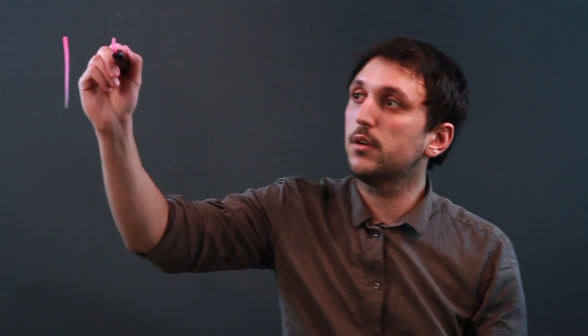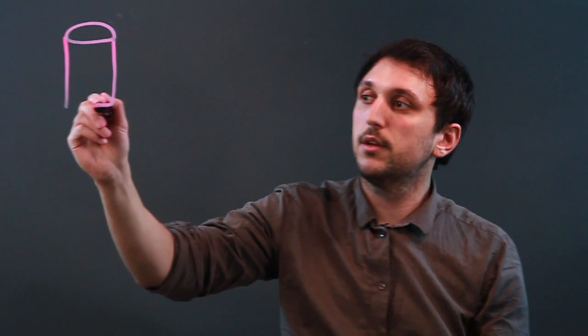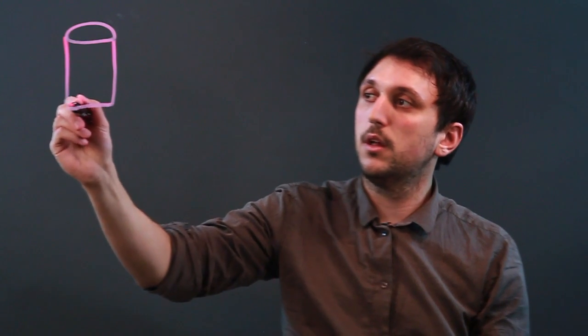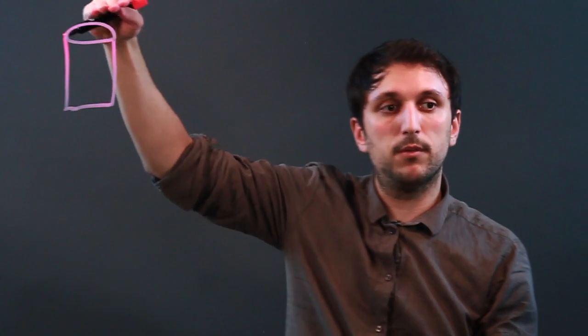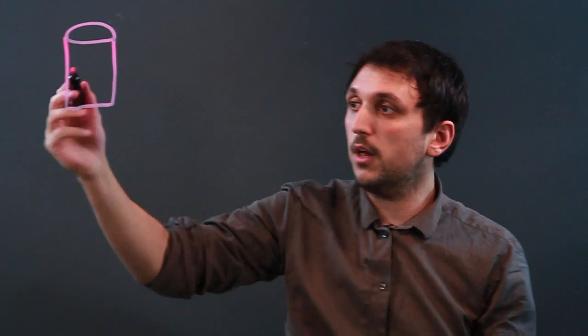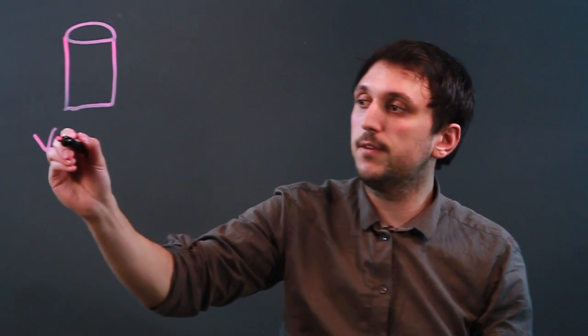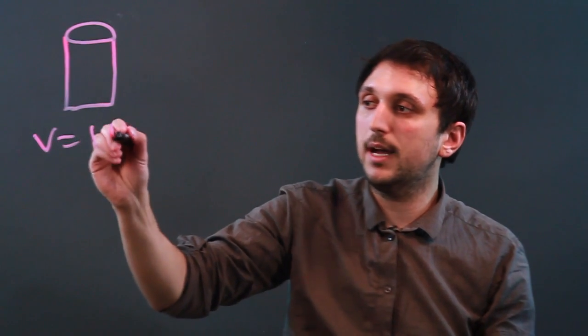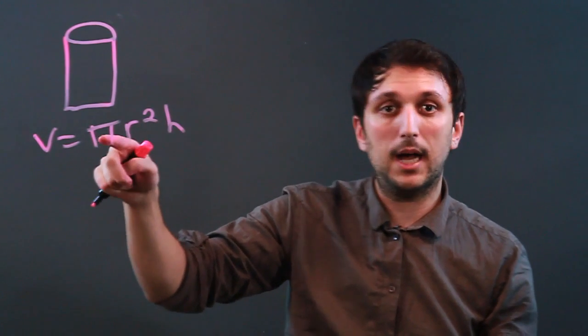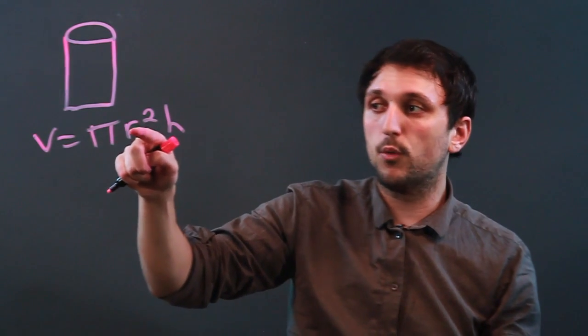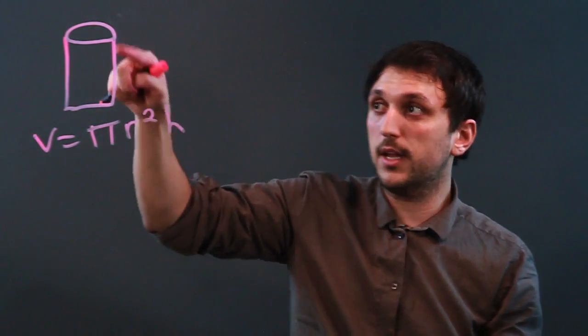First, let's look at a cylinder. A cylinder is a circular solid — imagine it as a circle just stacked on top of itself until you get to the top. The volume of any cylinder is V equals pi r squared h, meaning pi times the radius squared times the height.